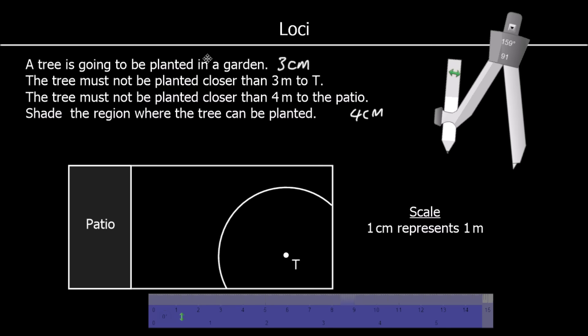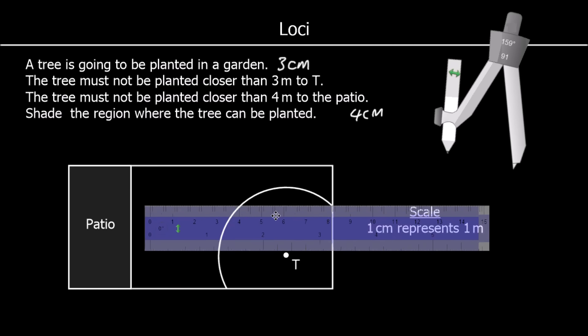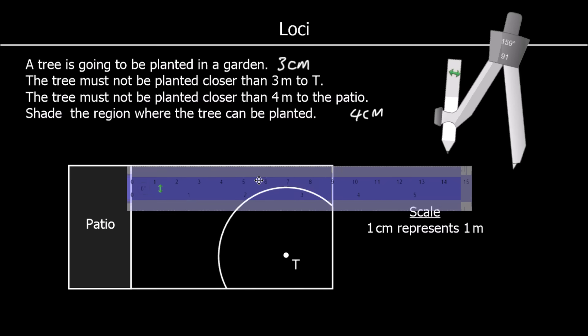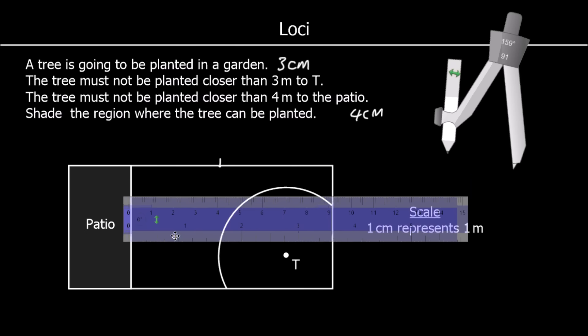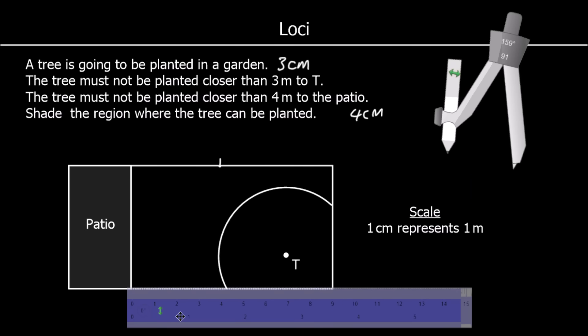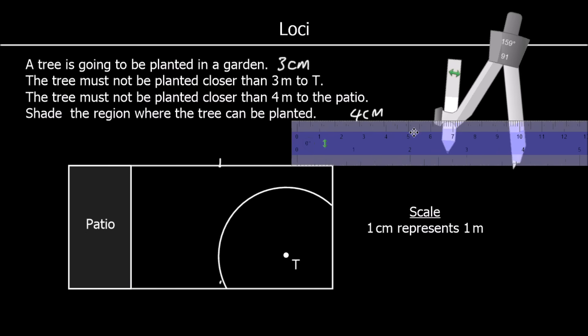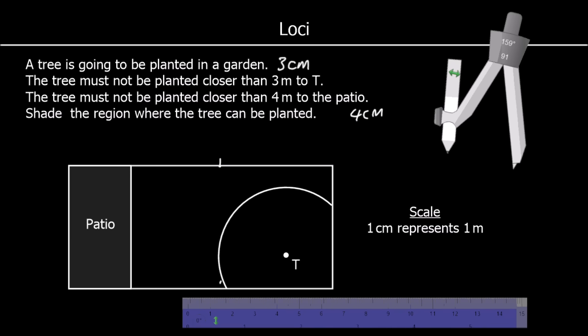And it must not be closer than 4 meters or 4 centimeters on the diagram to the patio. So 4 centimeters, we'll measure that. That's 4 centimeters, and I'll measure it on the other side, 4 centimeters. So we join them up using a straight line.